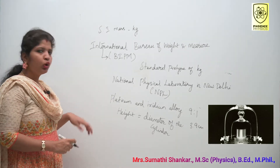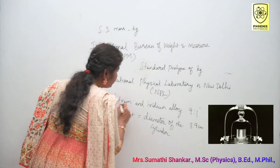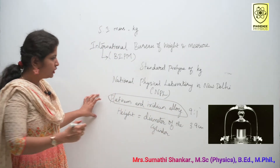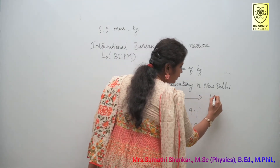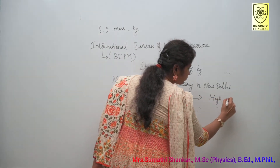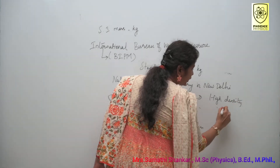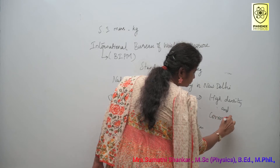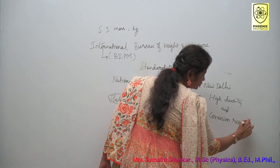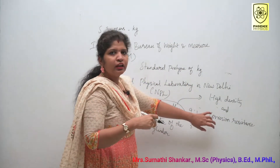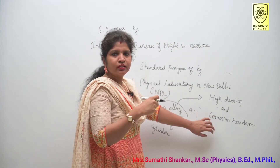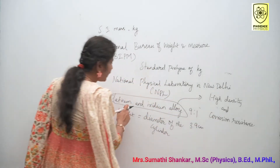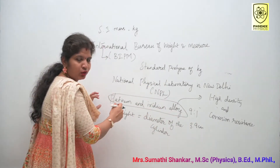Why do we use platinum and iridium alloy? Because these metals have high density and corrosion resistance, which means they do not oxidize under normal conditions. That is why we are using platinum and iridium alloy.